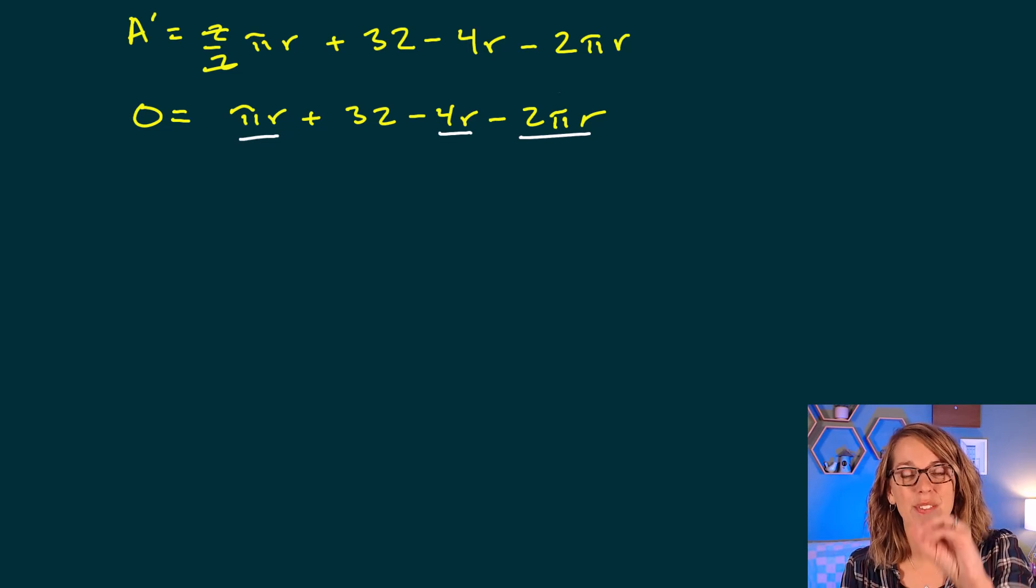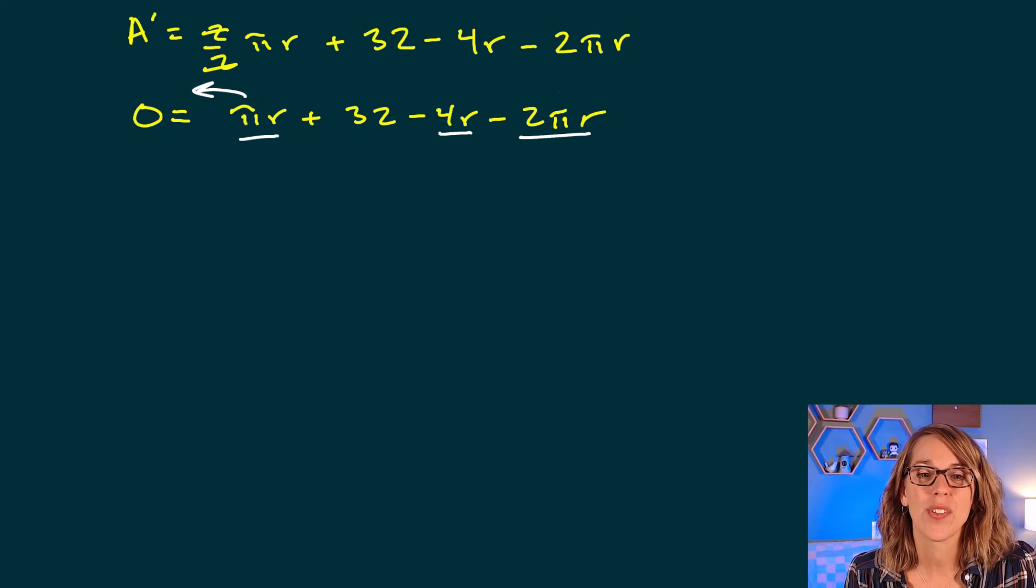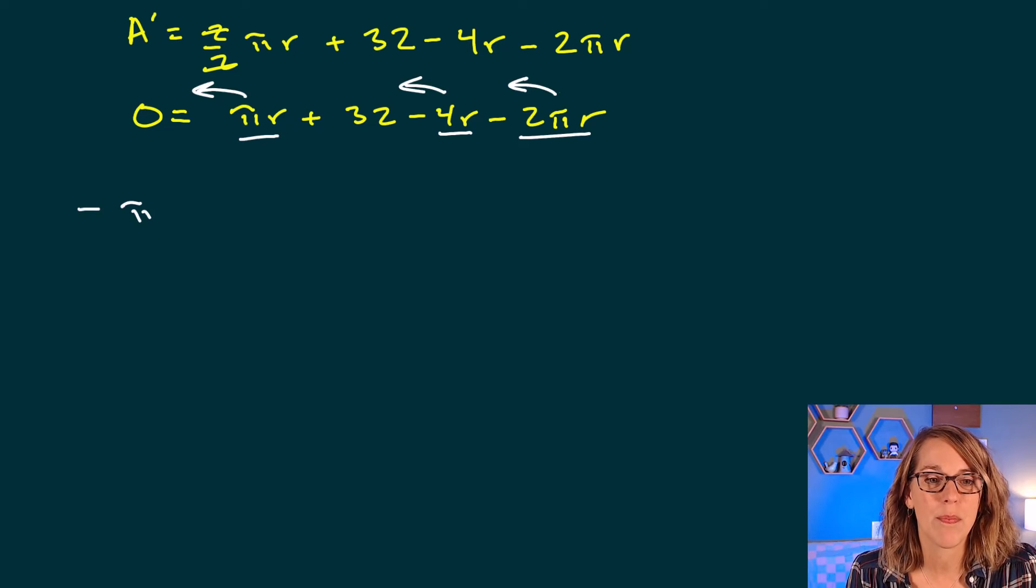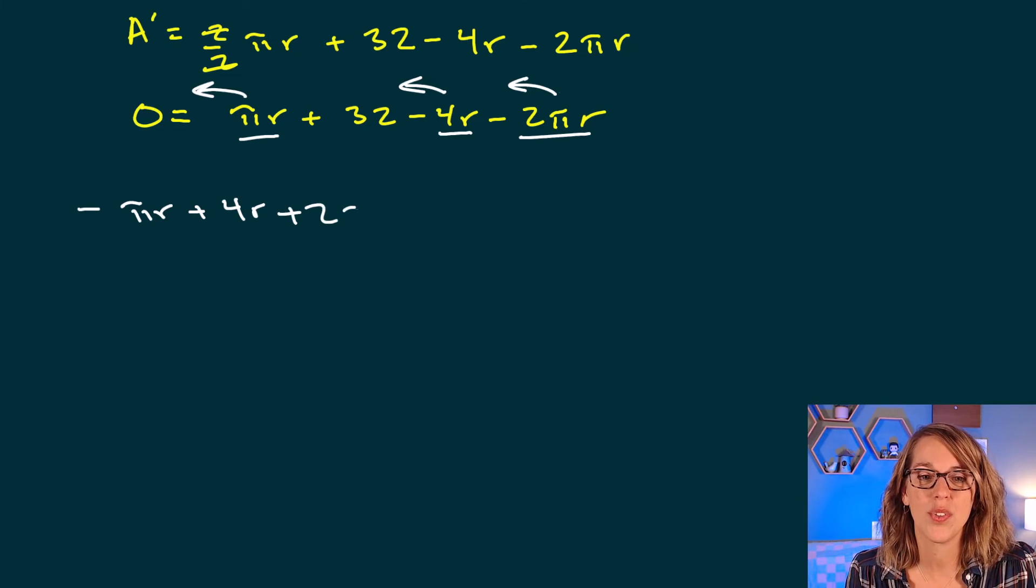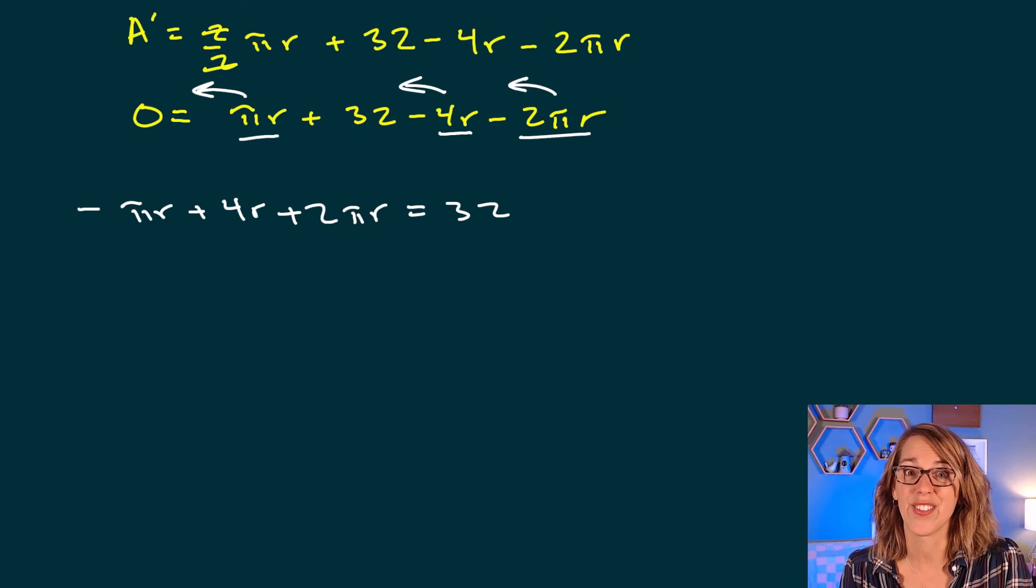I'm going to gather those and bring those to the other side of the equation and leave the 32. We also have some like terms that we can combine as well. So let's bring all three of those over. That becomes a negative pi r plus 4r plus 2 pi r and I'm left with a 32 on the other side.